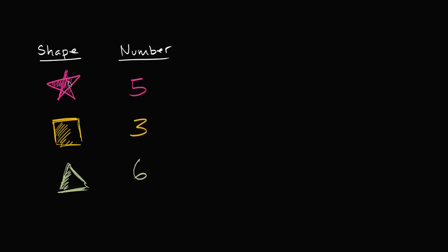So we have three different shapes. We have stars, we have squares, and we have triangles. And we have a different number of each shape. So we have five stars, we have three squares, and we have six triangles.